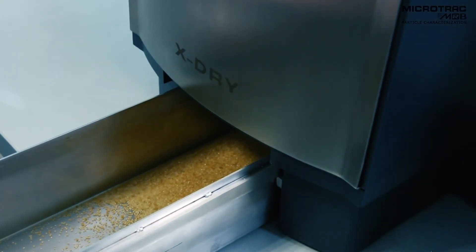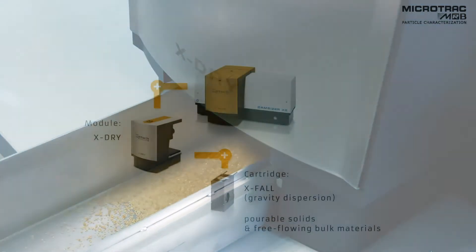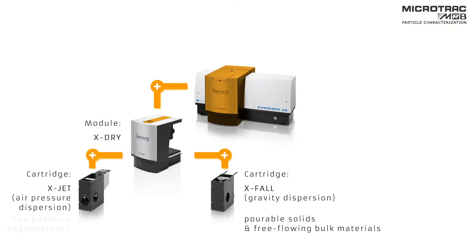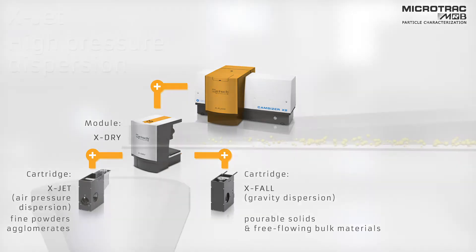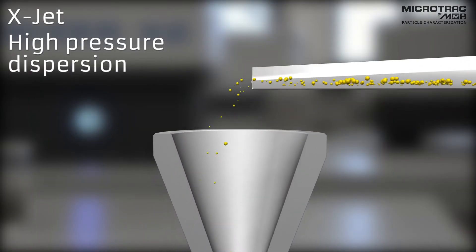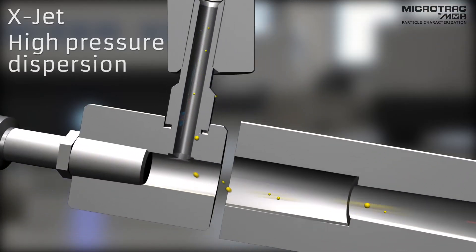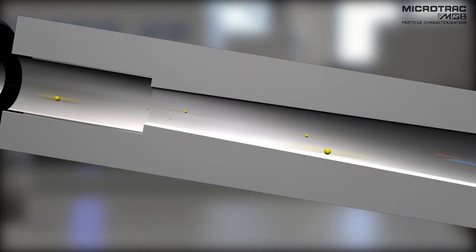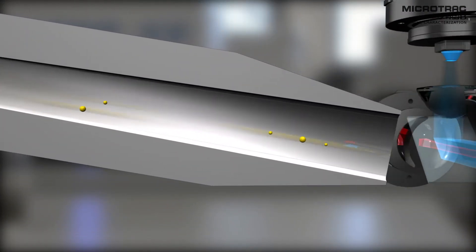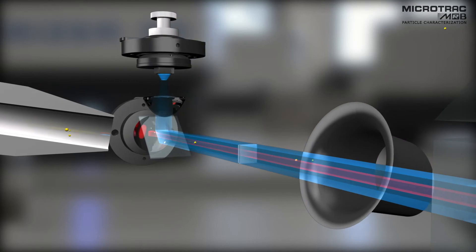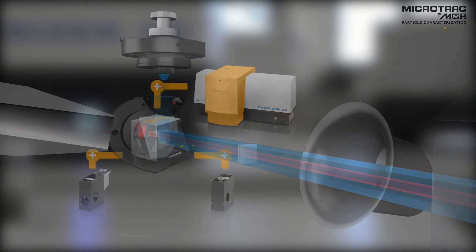The whole sample can be recovered after the measurement. The high-pressure cartridge X-jet is suitable for fine powders and agglomerated material. The sample is dispersed in an airflow which ensures that agglomerates, which would falsify the measurement results, are broken down prior to detection.